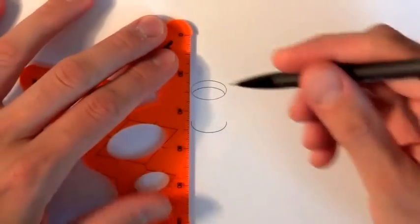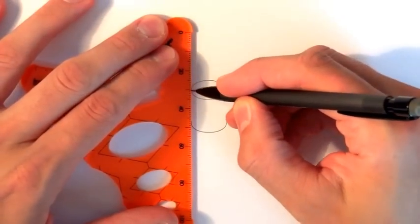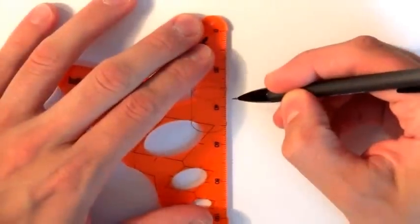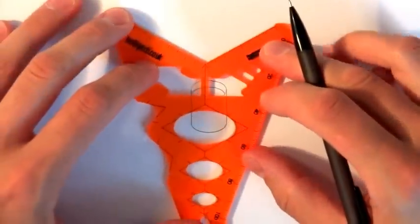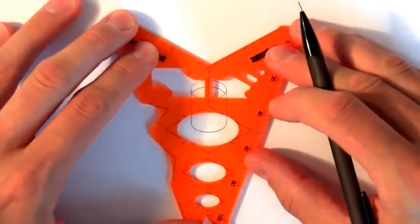We're going to use the ellipse tool again just to draw a half ellipse and then use the ruler to join those bits up. This is a case of being precise really. There's not a particularly easy way of doing it, but you can see it's pretty straightforward.